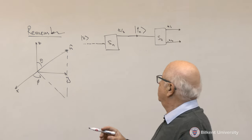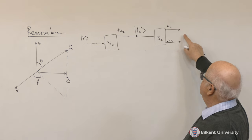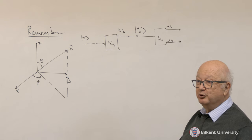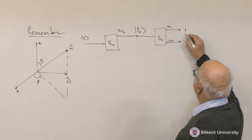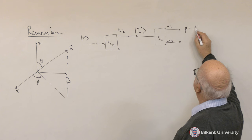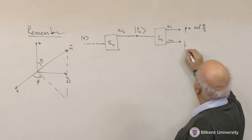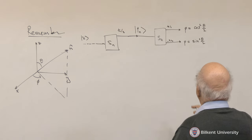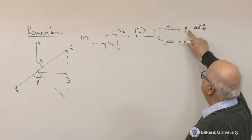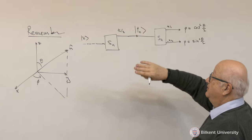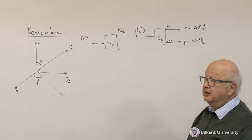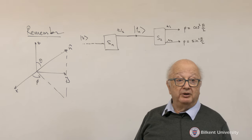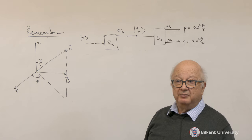If theta is 0, then obviously you get 100% probability for the plus case and 0 for the minus case. If theta is 180 degrees, if theta equals pi, then you are going to get 0 for plus and 1 for minus, because now you have turned your experiment upside down and minus-z becomes z and plus-z becomes minus-z.